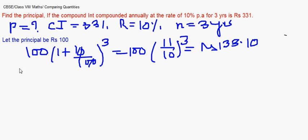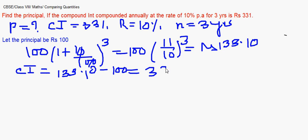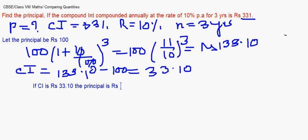In this case, the amount is 133.10 and the assumed principal is 100, so the compound interest works out to 33.10. Now we use this to find the actual principal: when compound interest is rupees 33.10, the principal is rupees 100.